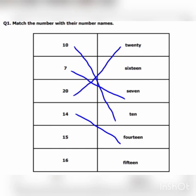And then we have fifteen. Fifteen — match fifteen with its number name. Fifteen is spelled F-I-F-T-E-E-N. And then sixteen. Sixteen — match sixteen with its number name. Sixteen is spelled S-I-X-T-E-E-N.